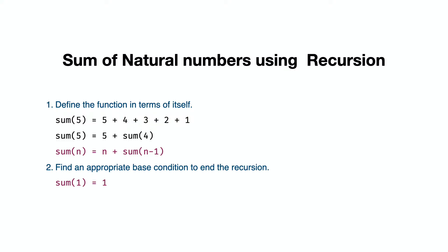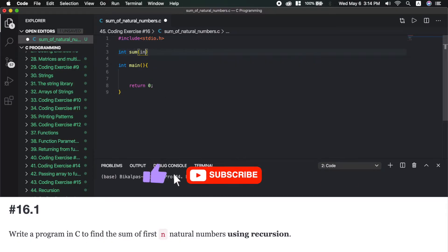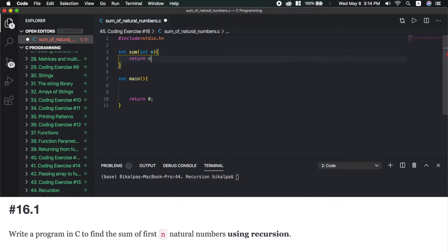If we have a base condition, it means that sum(1) equals 1, because the sum of the first 1 natural number is 1. So the definition is: int sum(int n), and the function will basically return n plus sum(n-1).